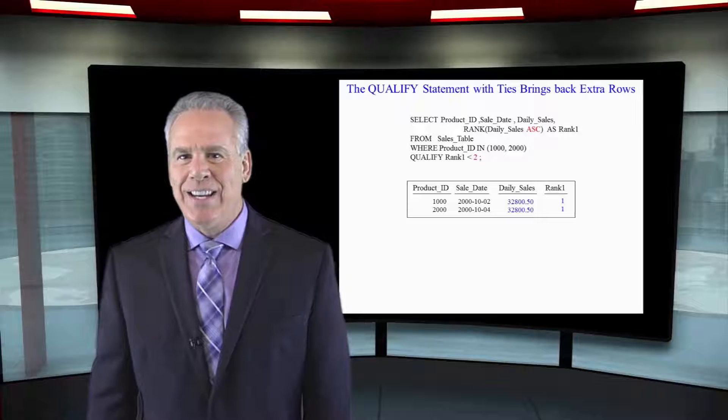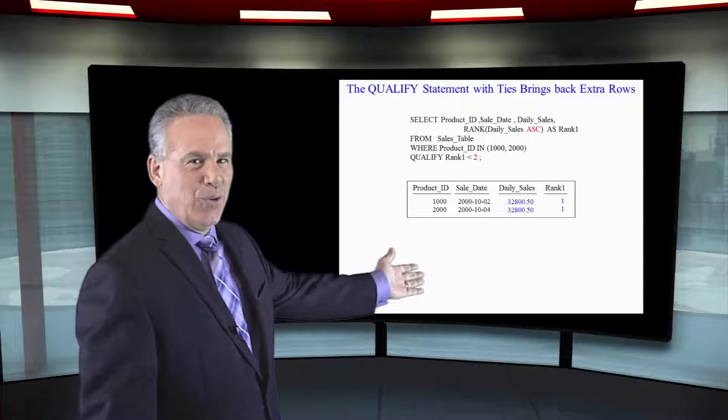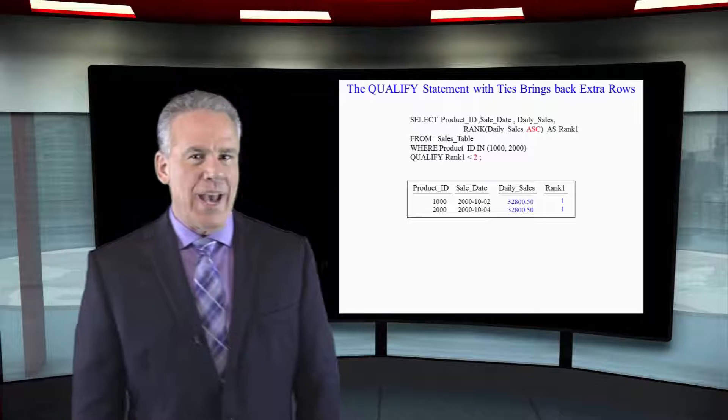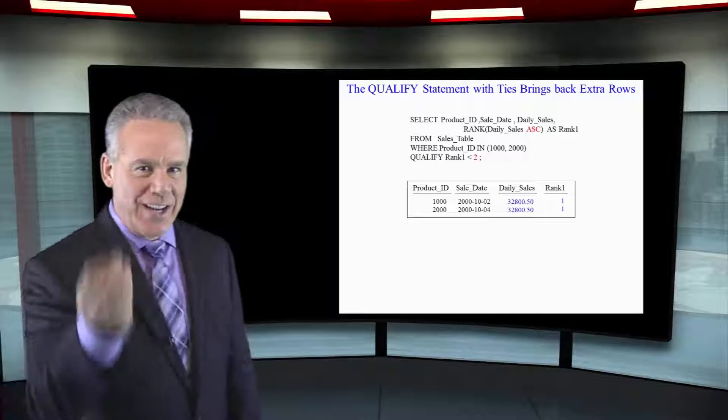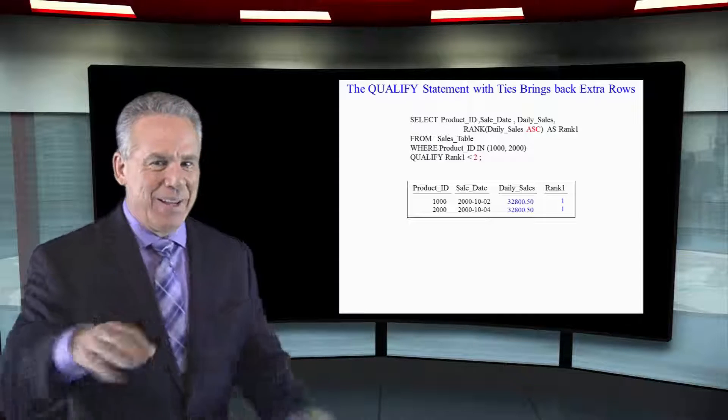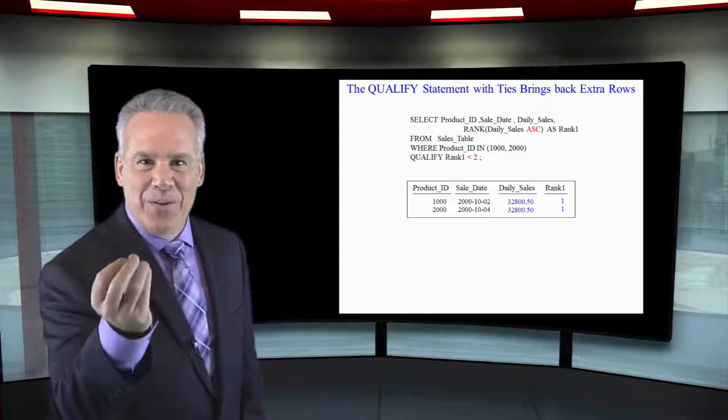As you can see here, we're qualifying our rank less than two. So you would think we would bring back one row, but because we're doing this in ascending order and because those two rows tied, it's going to bring back both of them.